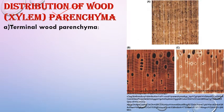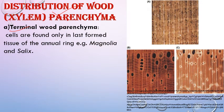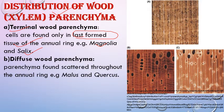First is terminal wood parenchyma, where parenchyma is present on the innermost tissue of the annual ring — the last to be formed. These cells are found only in the last-formed tissue of annual rings, for example in Magnolia and Salix. Second is diffused wood parenchyma — as the name indicates, the parenchymatous tissue is scattered throughout the annual ring, for example in Malus and Corcus.